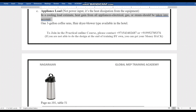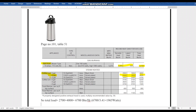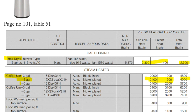In the cooling load estimate, heat gain from all appliances — electrical, gas, or steam — should be taken into account. In our case, I consider one 3-gallon coffee maker and a hair dryer available in the hotel. From Carrier Handbook page 101, Table 51, for a 3-gallon nickel-plated coffee maker, sensible heat is 2,400 BTU/hr and latent heat is 1,600 BTU/hr, totaling 4,000 BTU/hr. The hair dryer adds 2,700 BTU/hr, giving a grand total of 6,700 BTU/hr.